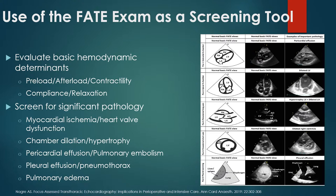In the images shown, you can see a normal view versus an effusion, a normal apical four-chamber versus a hypertrophied LV and a very large LV. There's a normal parasternal long axis view, a dilated RV, and from a short axis view you can identify a pleural effusion as well.